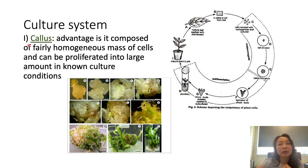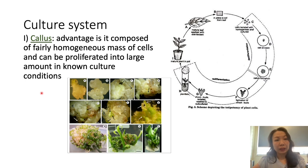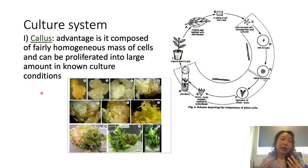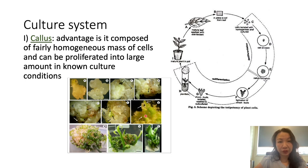The first and very famous culture type is the callus. The advantages of callus are that it is composed of a very homogeneous mass of cells and can be proliferated into large amounts under known culture conditions. As mentioned in previous lectures, the combination of different hormones — auxin and cytokinin — can induce the formation of the callus. This slide shows an example picture of a callus and the initiation of differentiation.